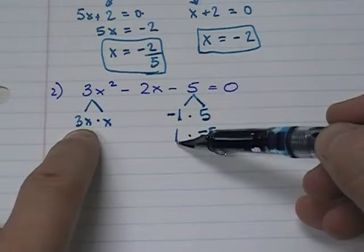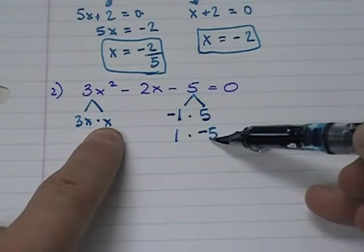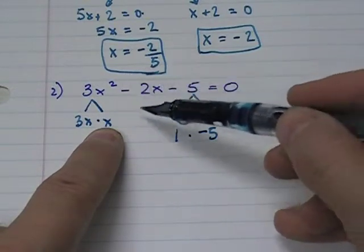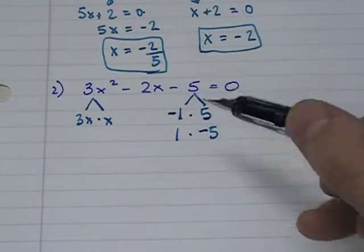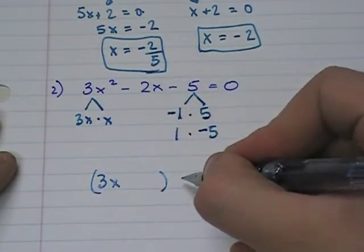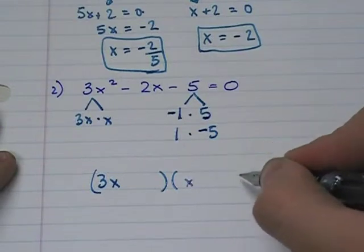What's 3 times 1? 3. 1 times negative 5 is negative 5. What's 3 minus 5? Negative 2. So we have to write these so that they multiply that way. Well, you have to remember how you multiply polynomials.